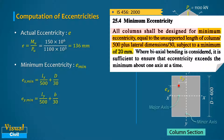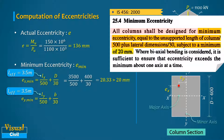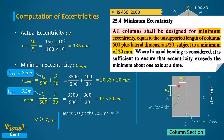Since the unsupported length is not available, consider it equal to the effective length of 3.5 m. Putting all values in mm into the formula, we get ex,min = 20.33 mm and ey,min = 17 mm. The actual eccentricity of 136 mm is greater than the minimum eccentricity, hence design the column as a short column subjected to axial load and uniaxial moment.